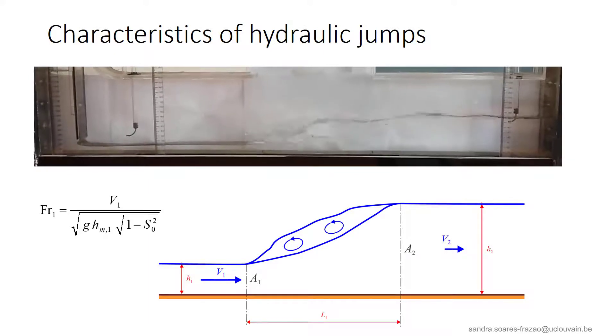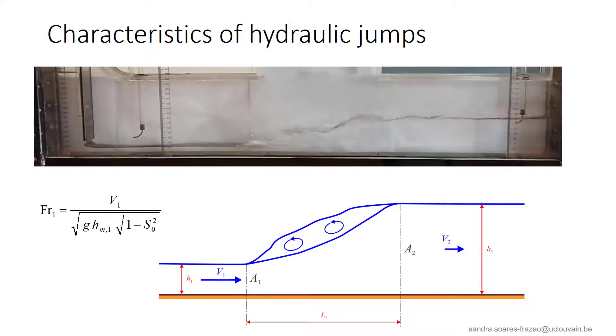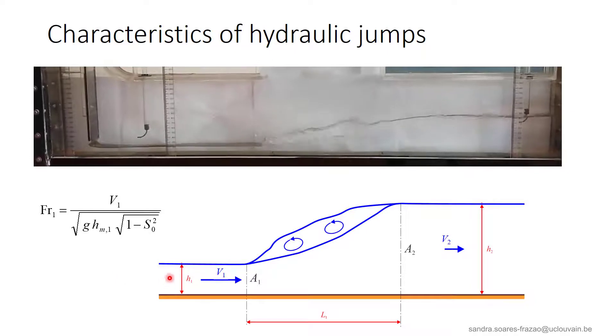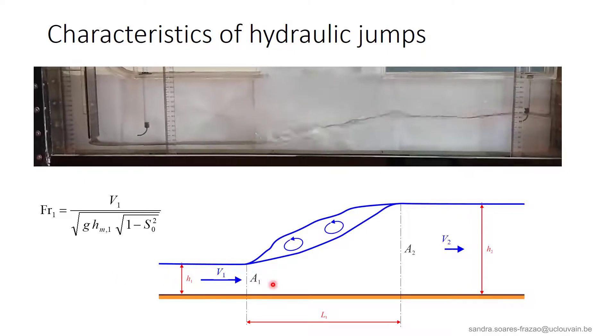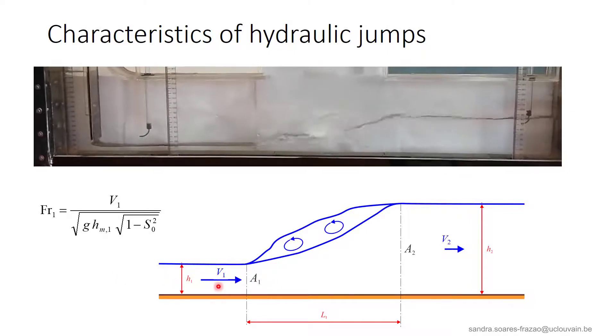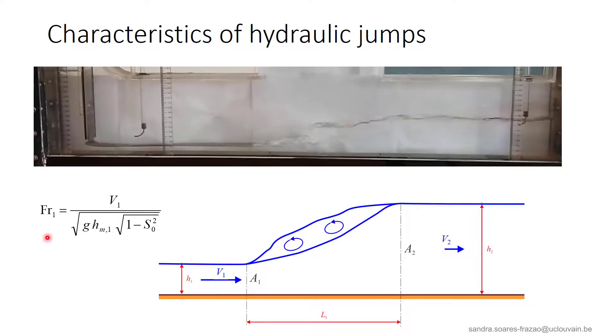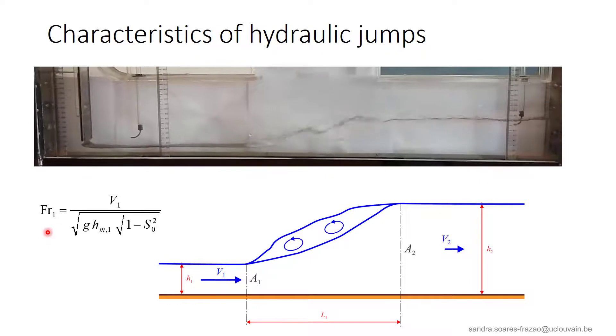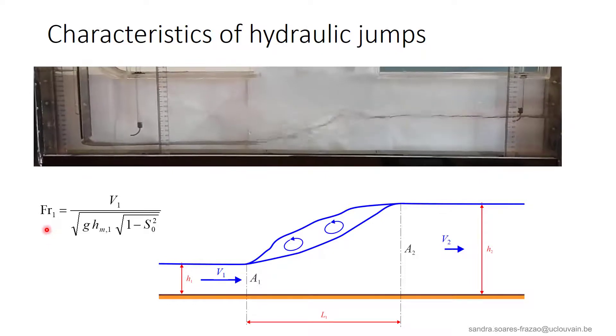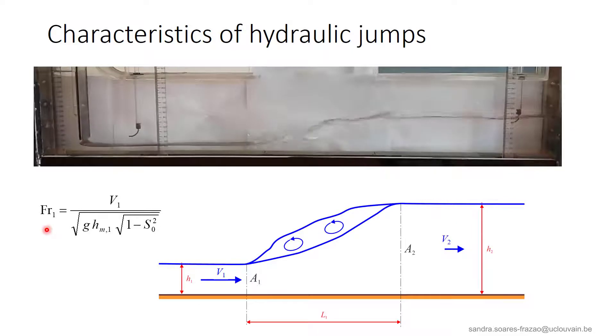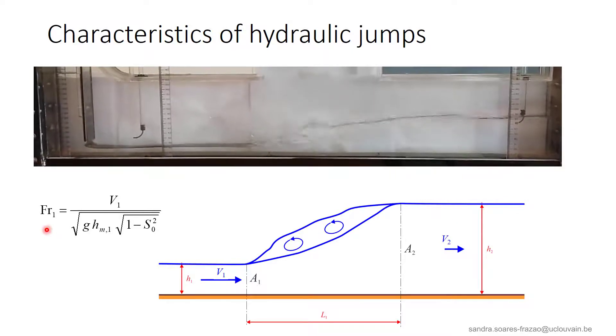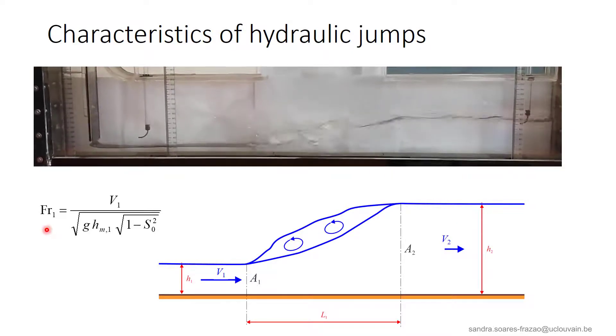In a hydraulic jump, as sketched here, we have the incoming flow with a water depth h1, a cross-section A1 and a velocity v1. With these values, we can calculate the Froude number of the incoming flow. We will show later that the incoming flow is always supercritical, so this Froude number FR1 will always be larger than 1.